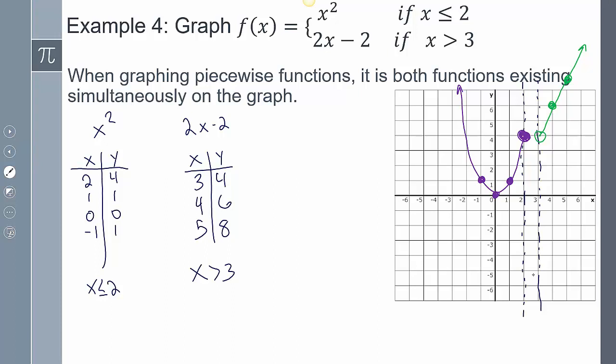The idea of a piecewise is we have multiple graphs mapped on the same graph. Going back to modeling questions where we saw this notation previously, it allows us to model more than one graph based upon the scenario. We can create more than one graph on this Cartesian plane based upon the scenario. That's the power of it.